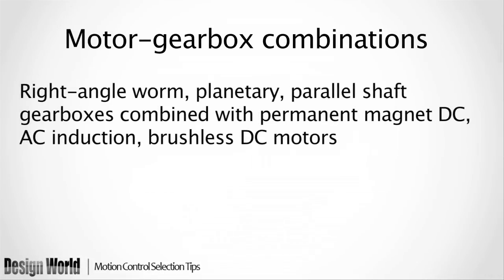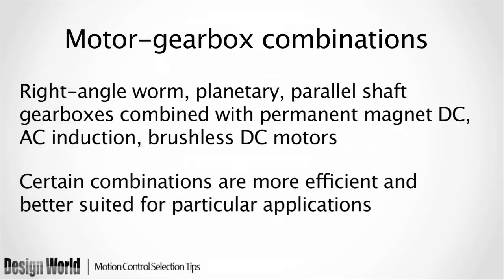If a gear motor is necessary, there's another level of complexity that will be added, and several more criteria need to be looked at. There are a number of motors and gearbox types that can be combined. For example, the right angle worm, planetary, and parallel shaft gearboxes can be combined with permanent magnet DC, AC induction, or brushless DC motors. Though there are a vast number of different motor and gearbox combinations, not just any one will work for the application. Certain combinations are more efficient and cost effective than others. Knowing the application and having accurate ratings for the motor and gearbox is the foundation for successfully integrating the gear motor into the system.